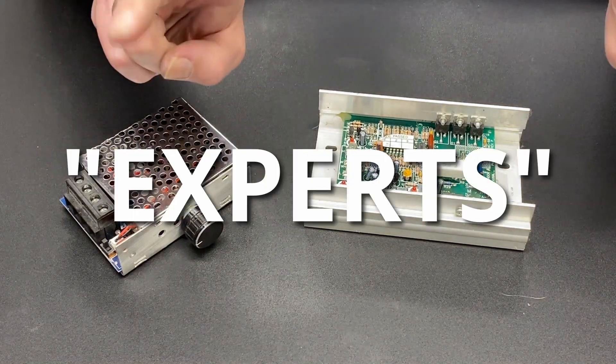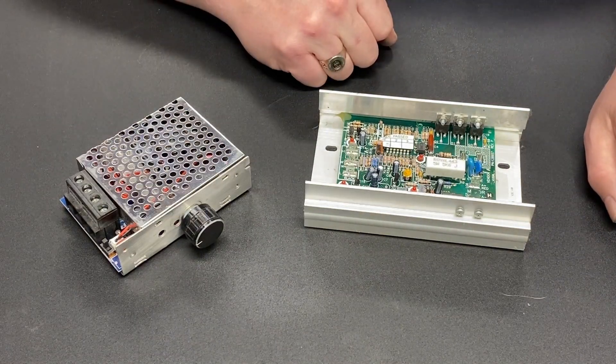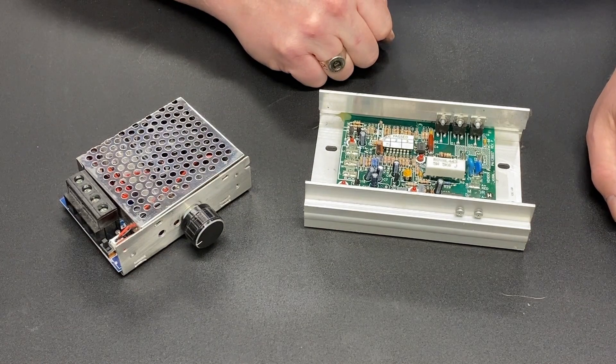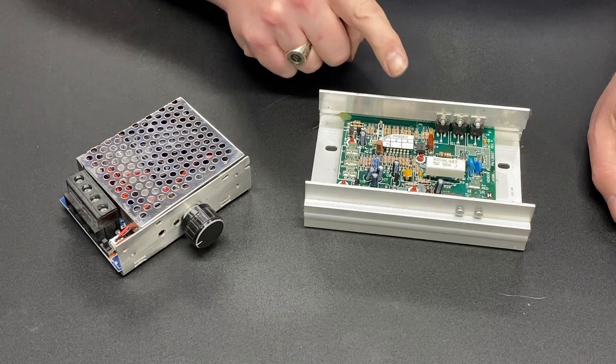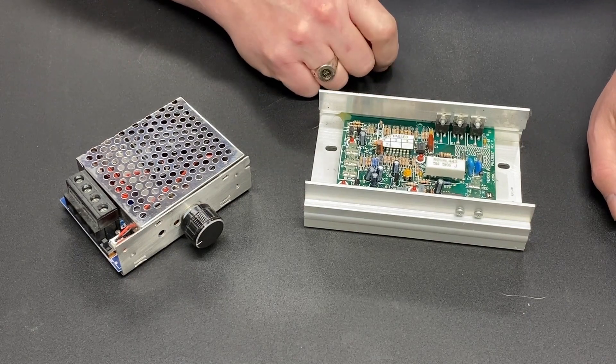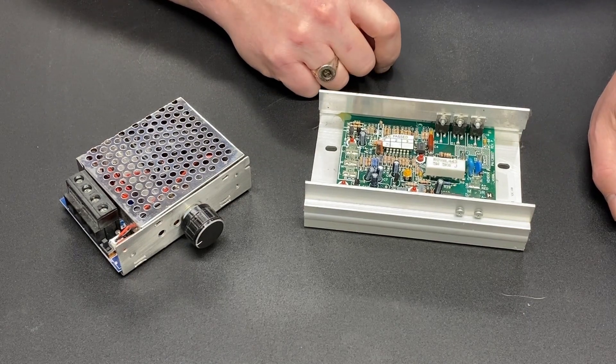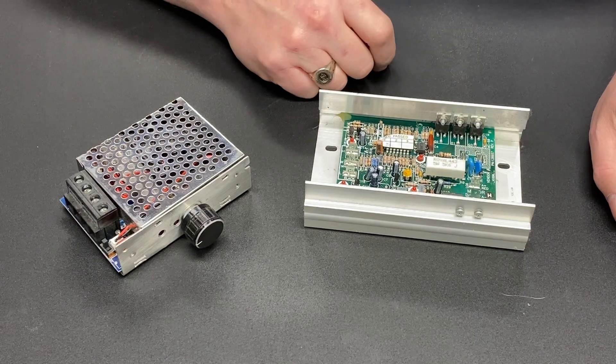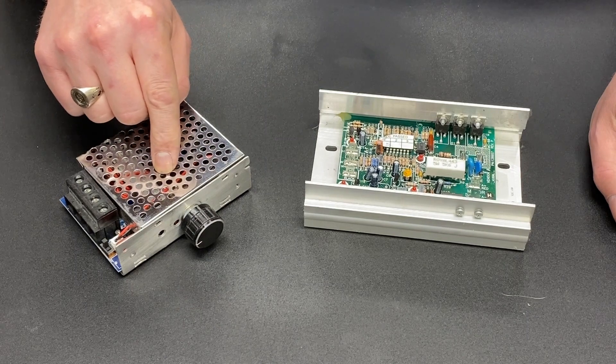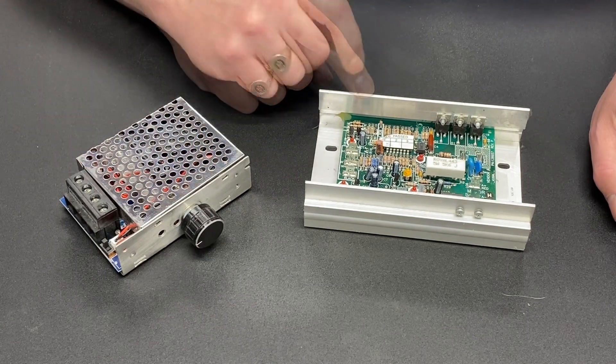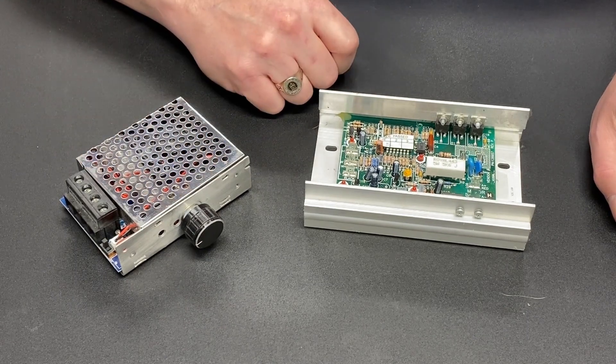According to the internet experts, an SCR voltage controller is a crappy way to power a treadmill motor, and an MC60 is a far better way to power a treadmill motor. So we're going to answer the question, which one is better, the SCR voltage controller or the MC60? Spoiler alert, it's a trick question.